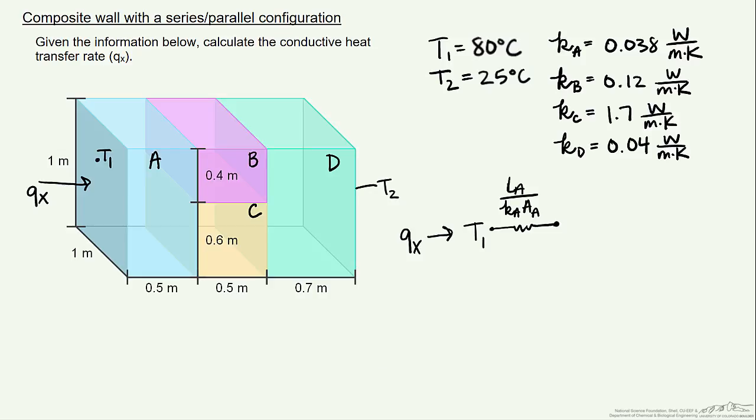Then we get to a point where the wall splits into two sections of different lengths, as well as different materials. However, instead of continuing with a straight line, we split this off so that there's one resistance that goes with wall B, and one resistance that goes with wall C.